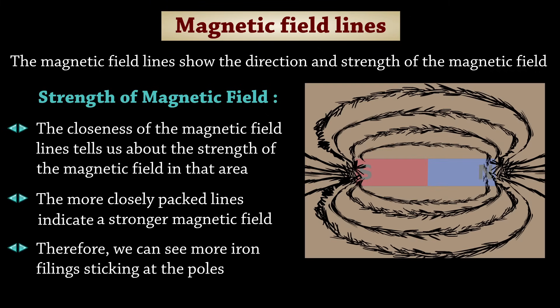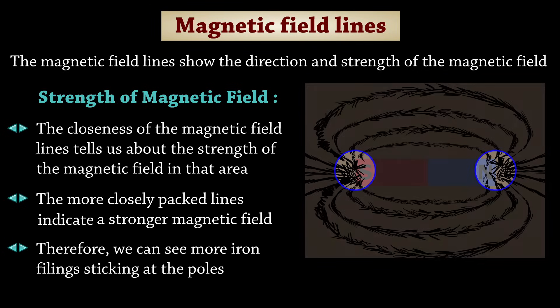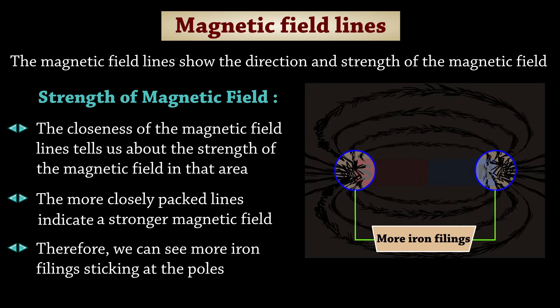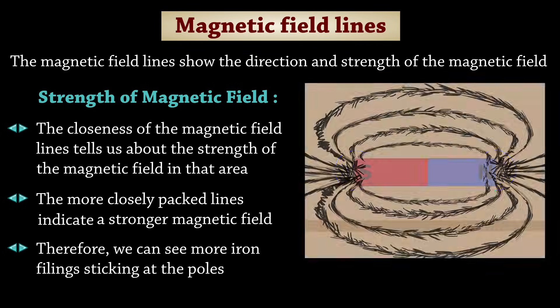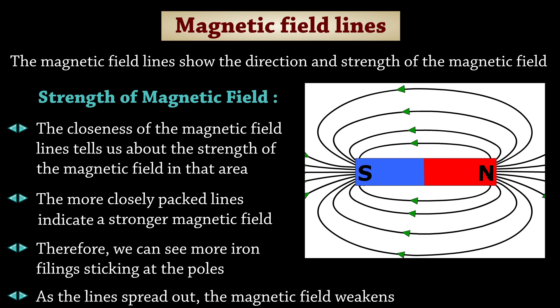Therefore, we can see more iron filings sticking at the poles. As the lines spread out, the magnetic field weakens.